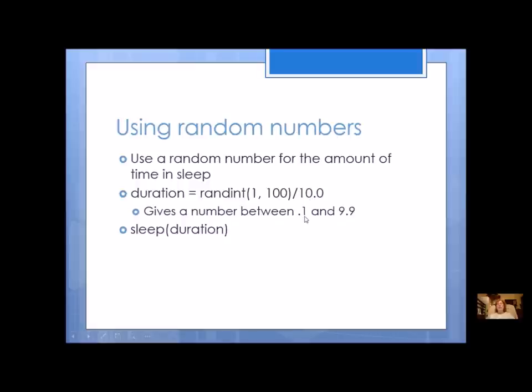So this one will give me 0.1 to 9.9, and you can adjust these any way you want. But I want some kind of a decimal number for my duration. I can use it in the sleep method or just about anywhere else.